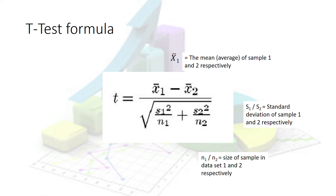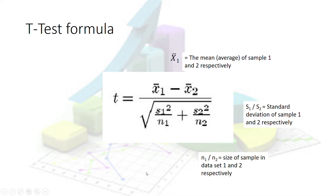The t-test formula looks a bit frightening but is fairly straightforward. x̄₁ and x̄₂ are the means of samples one and two. s₁ and s₂ are the standard deviations of each sample. n₁ and n₂ are the sample sizes. You would square the standard deviations and substitute everything in — though it's unlikely you'd be asked to calculate everything from scratch, as that's quite a tricky formula.